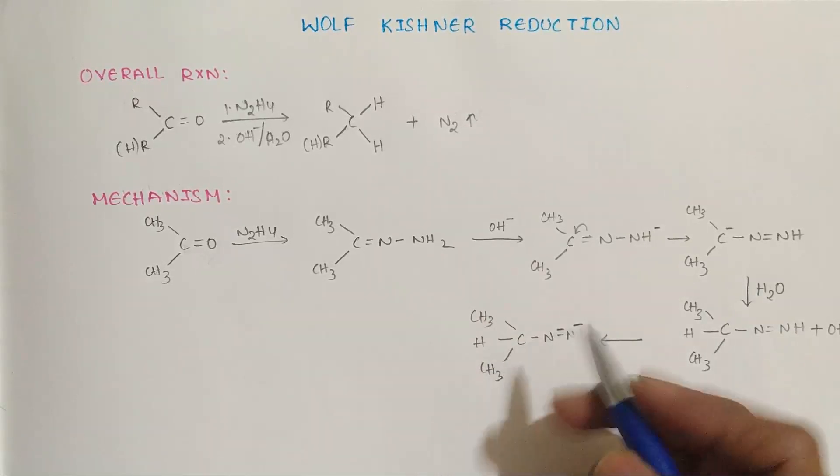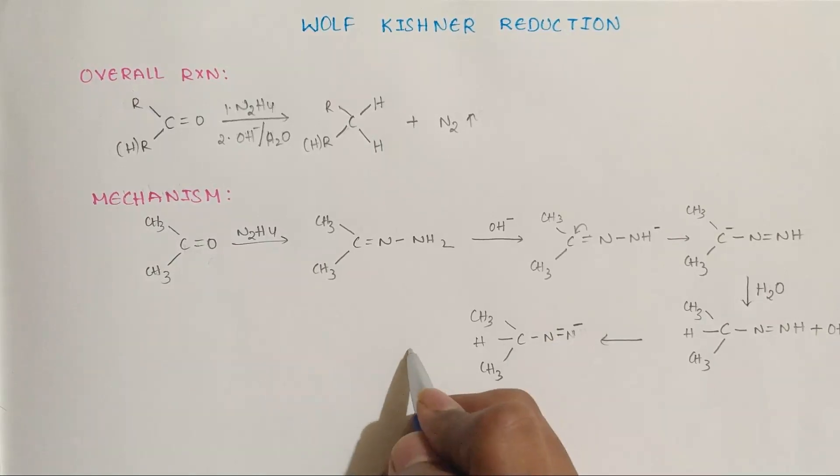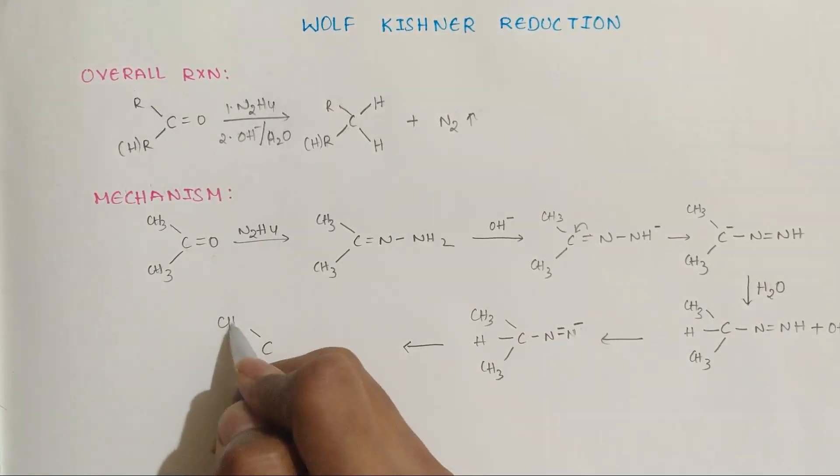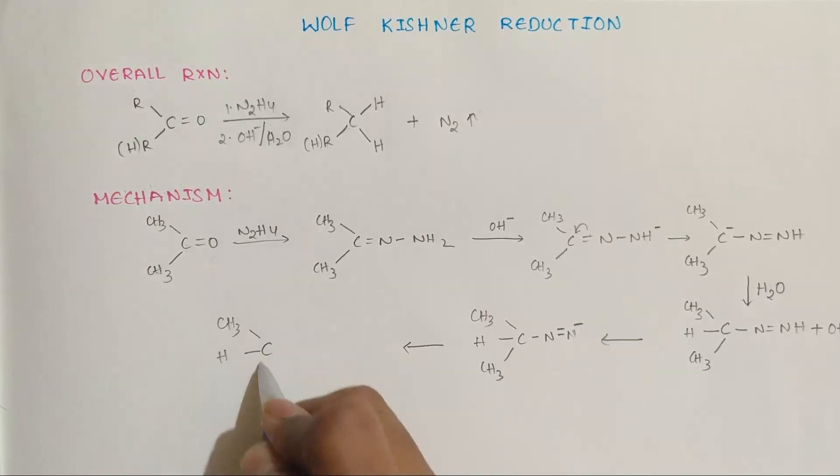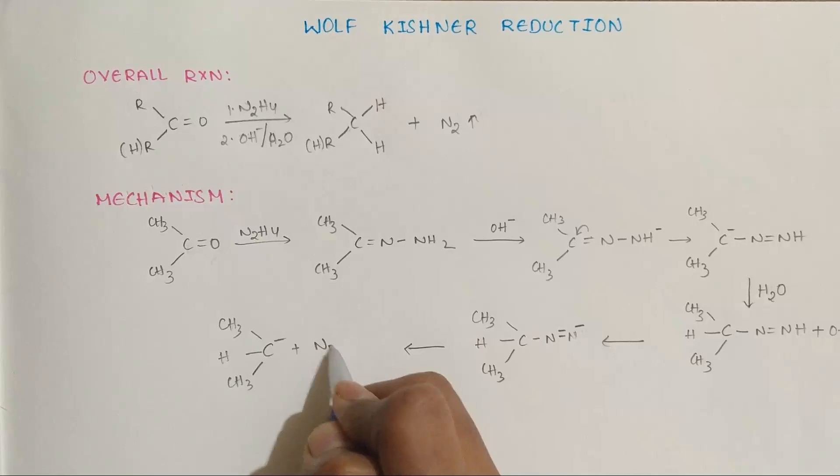Now it leaves this whole group and as entropy favors, it converts into nitrogen gas, forming minus plus N2.